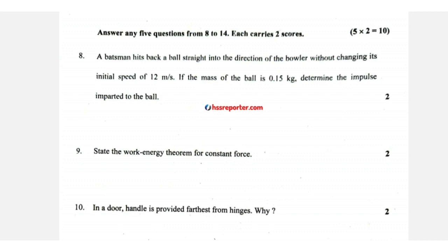The next question: a badminton player hits the shuttle. By Newton's laws of motion and impulse-momentum theorem, I equals 2mV. So I equals 2 into 0.15 into 12. That gives 2 into 0.15 into 12: 12 into 2 is 24, then times 0.15 gives 3.6 N·s. The answer is 3.6. For work-energy, the value of work done equals change in kinetic energy. For the door handle, maximum torque requires the handle farthest from the hinges.